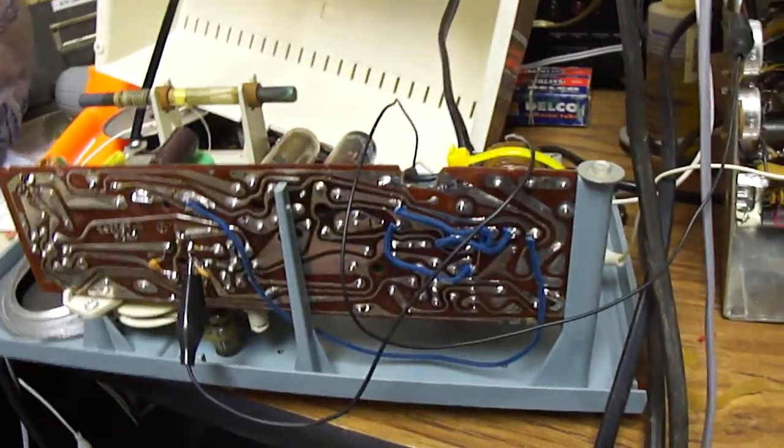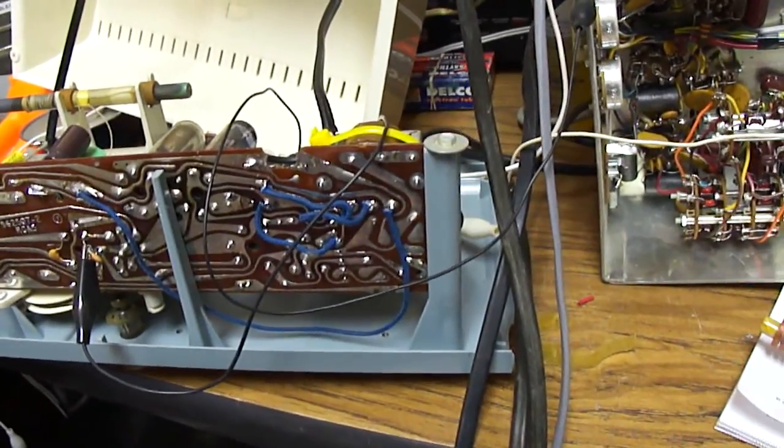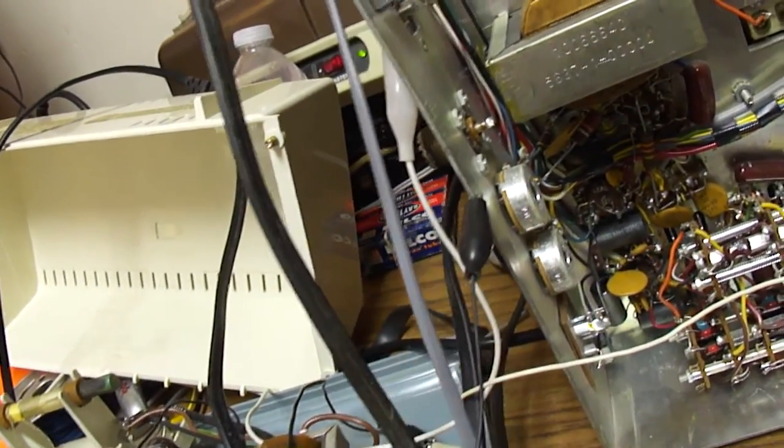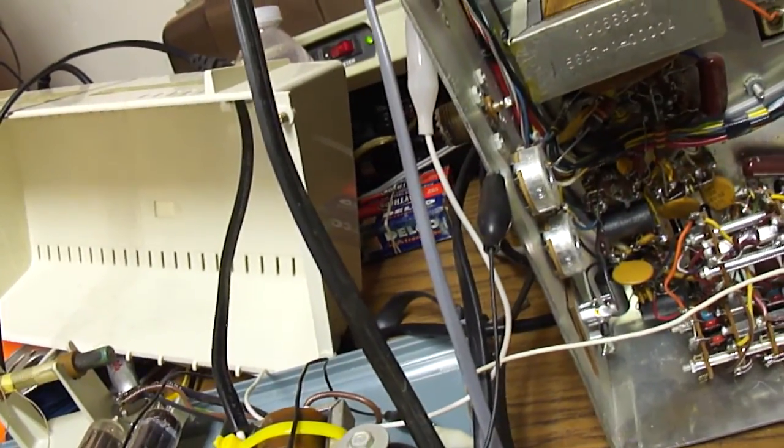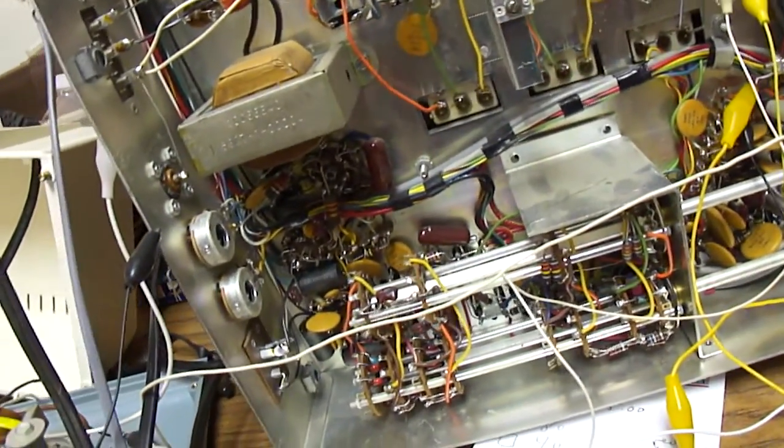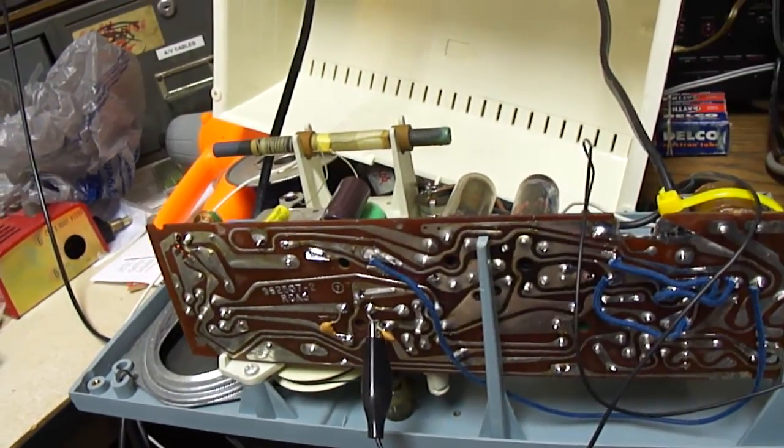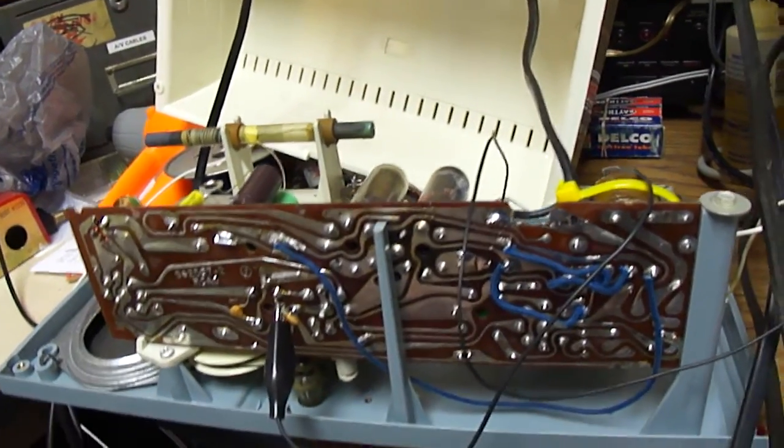I've got this hooked up to the isolation transformer. This would be very dangerous to do without it because you could cause a short across the power line by connecting the chassis of the Hammerland and this. It also would be a shock hazard. In order to hook up a transformerless radio chassis to any other external equipment, you need the isolation transformer.